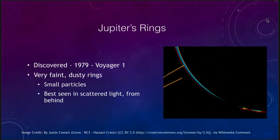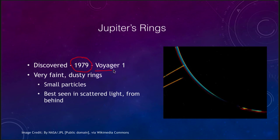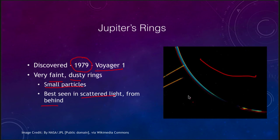Jupiter's rings were discovered in 1979 by the Voyager 1 spacecraft. They are very faint and dusty rings made up of small particles, best seen in scattered light from behind. We don't see them well from Earth because they're not reflecting a lot of light, but looking from behind Jupiter — as seen by Voyager 1 — we can see the dark unilluminated side of Jupiter and the very thin illuminated ring going around it. Jupiter does have this very faint ring, but not a lot of detail.